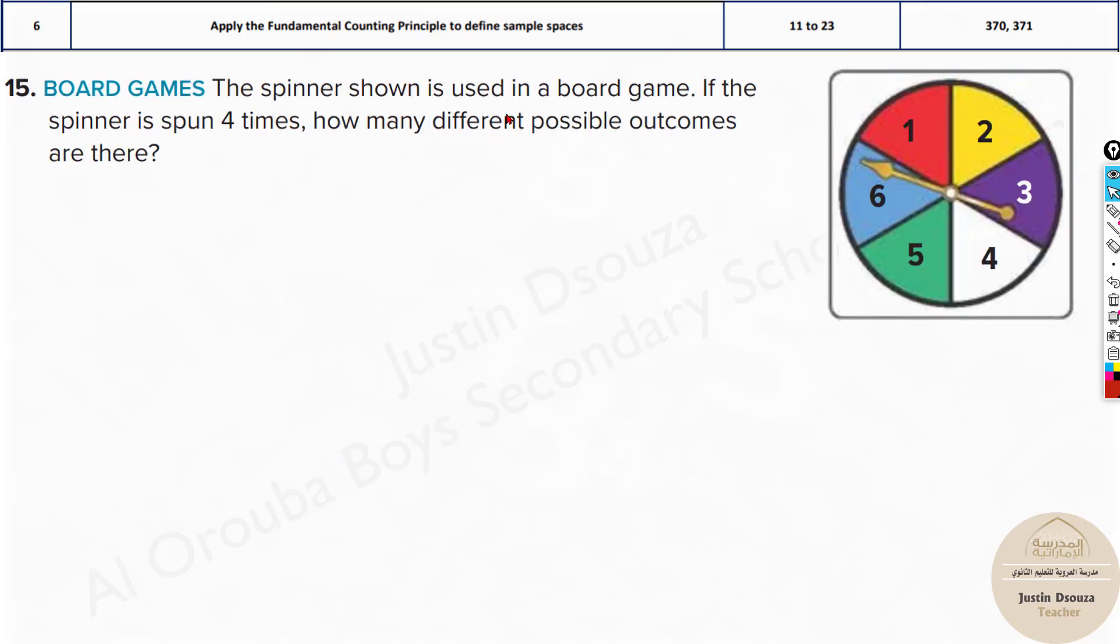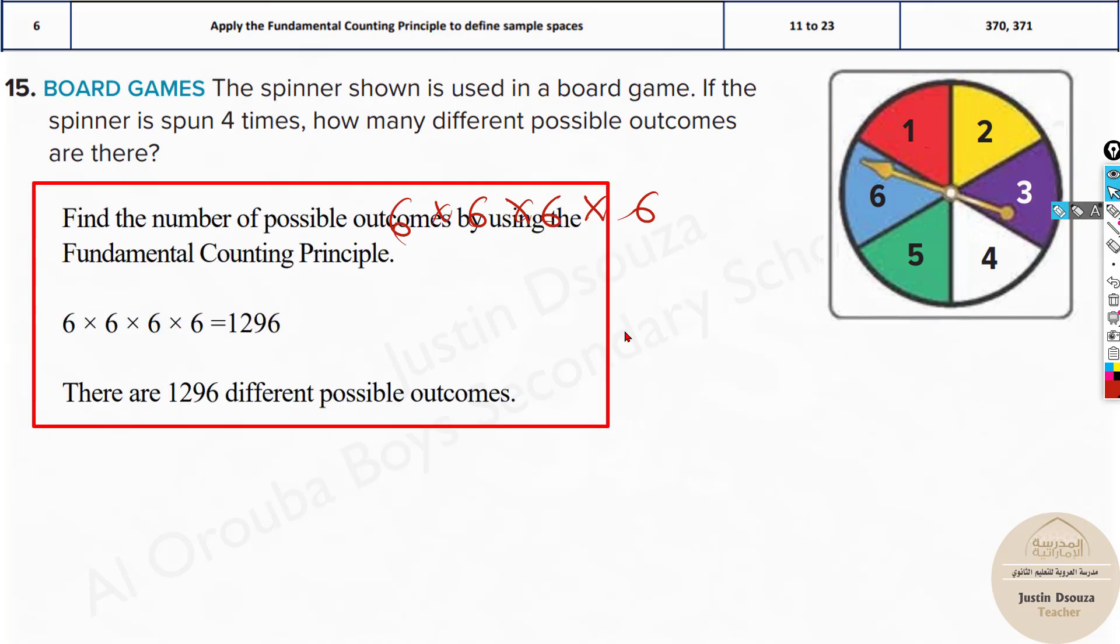Here we have a spinner which is used in a board game. If the spinner is spun four times, how many different possible outcomes are there? What are the total possibilities when you spin one time this particular spinner? There are six outcomes. So it's six. Now again you're going to spin it, it's going to be six. Again spinning, fourth time also it's six. So six to the power four would be the answer. Just multiply this four times, you'll get the answer. That's 1296.